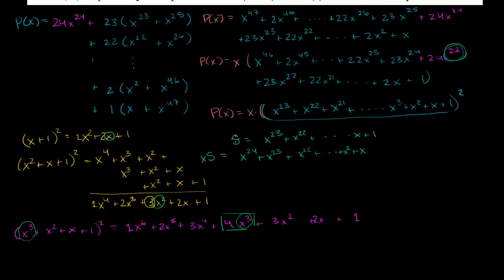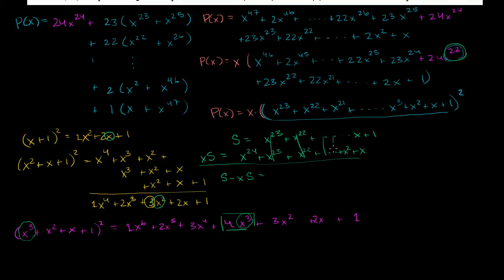Now let's subtract x times s from s. On the left-hand side you have s minus xs. On the right-hand side, all the intermediate terms cancel out, and you're left with 1 minus x to the 24th.